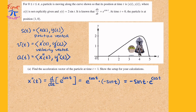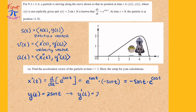To find the second derivative of y with respect to t: y of t is equal to 2 sine of t. Differentiating a first time, we get y prime of t is equal to 2 cosine of t. Differentiating a second time, we get y double prime is equal to negative 2 sine of t. So now we have the components of our acceleration vector.